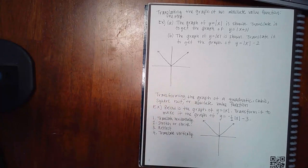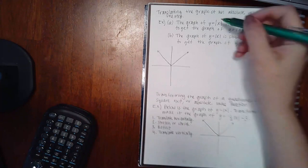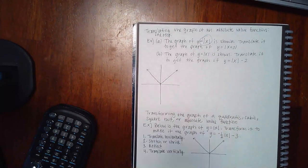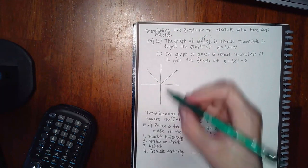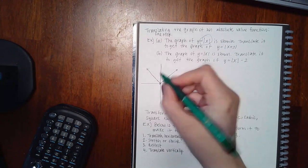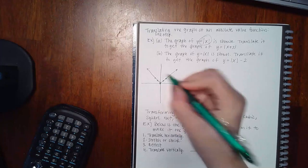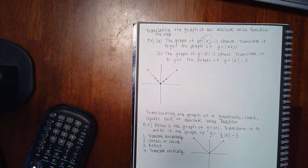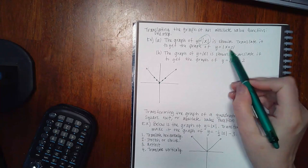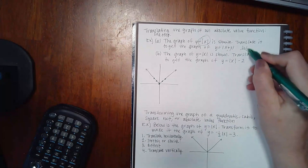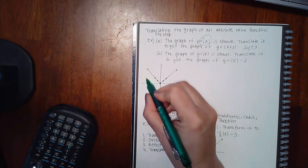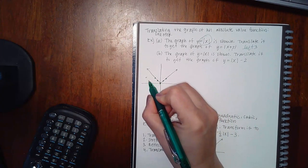This next one has a different parent graph — the absolute value of x. The shape is a V, with five key points: (0,0), (1,1), (2,2), (-1,1), and (-2,2). For the first problem, adding on the inside means it goes to the left three units, so I take each one of these points and move it to the left three units.